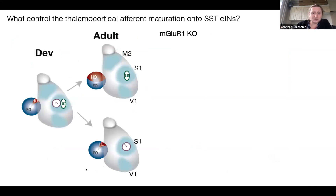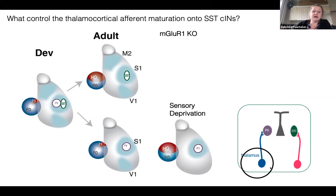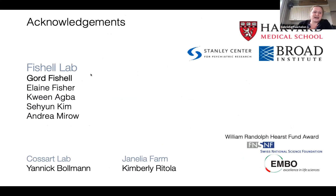To summarize: we have a mechanism in which presynaptic thalamic input is defined by the area early on, and then postsynaptically, somatostatin interneurons regulate the way this input comes in via MgluR1, while PV interneurons are affected by activity. This aligns with the idea of cell-autonomous versus non-cell-autonomous identity that Andy was describing. Thanks to the Fischer Lab, collaborators in the COSA lab, and Kim at Janelia Forum.